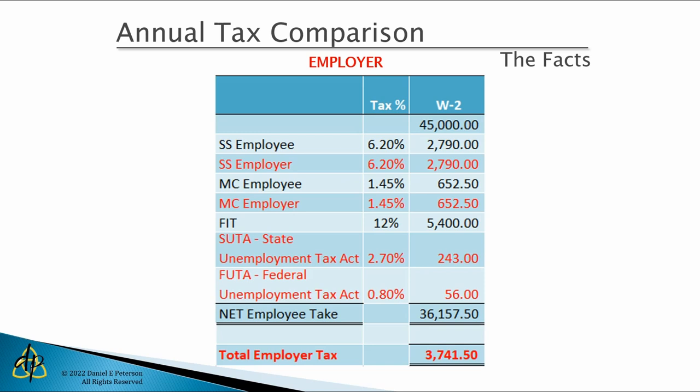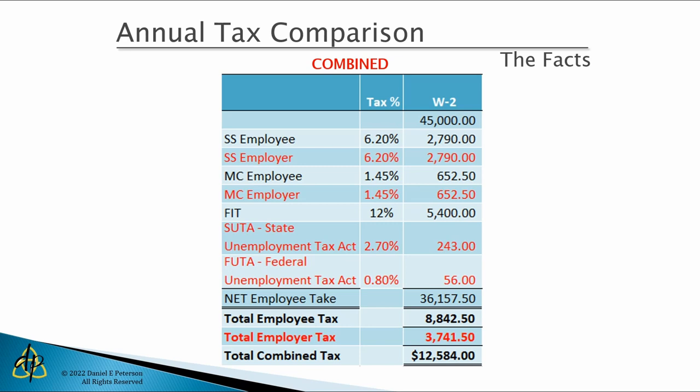At the same time the employer is paying the $45,000 in wages, they are also contributing their half of Social Security tax, Medicare tax, and state and federal unemployment taxes. In this scenario, that total employer tax burden is $3,741.50. So the employer withholds the $8,000 in tax from the employee's check and adds the $3,700 employer portion, remitting a total of $12,584 to the various taxing agencies.